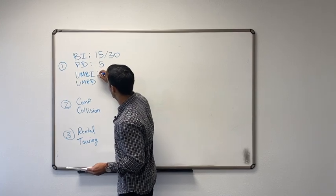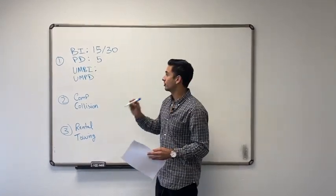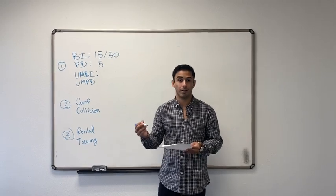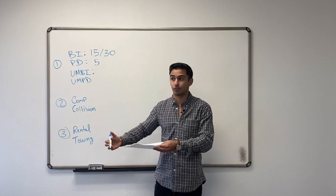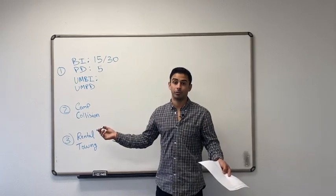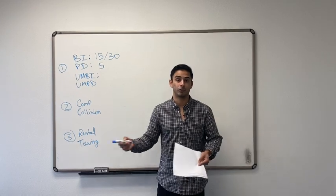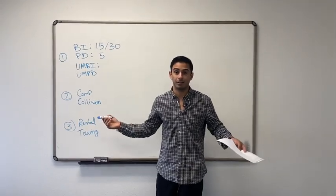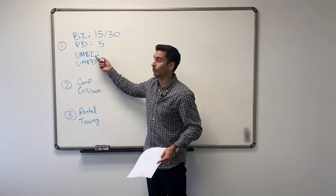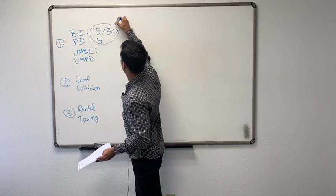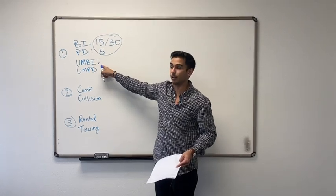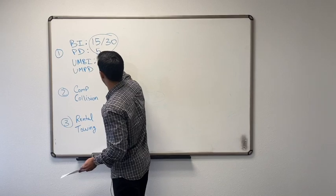This here next one is uninsured motorist bodily injury. So uninsured motorist stands for exactly what it sounds like. Somebody hits you and they don't have insurance. If that person hits you and they don't have insurance, you might be stuck with medical bills for somebody in your car, for yourself. So you can turn around and try to sue them. That's another option because if they don't have coverage, you could say, Hey, I'm going to take you to small claims court. I'm going to sue you. Guess what? The guy's broke too. So you have nothing. You can't take anything from him. You're screwed.